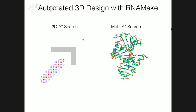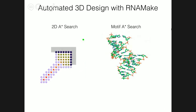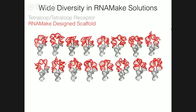For testing purposes I've only made 16. You can see the huge diversity of possible solutions that were found. In gray is the scaffold — the tetraloop receptor — which is the same in every construct. The red is the RNA Make design scaffold. So you can see there's huge diversity for the possible solutions found.